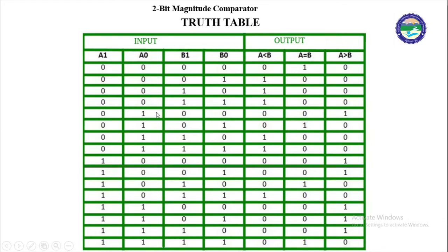For the fifth case, A1=0, A0=1, B1=0, B0=0 — B is 0 and A is 1, so A is greater than B — we write 1 for A greater than B and other combinations are 0. For the sixth case, 0,1,0,1 — both A and B inputs are the same, so A equal to B is 1 and the other outputs are 0. Similarly, we will write all 16 possible inputs and their corresponding outputs to complete the truth table for the 2-bit magnitude comparator.